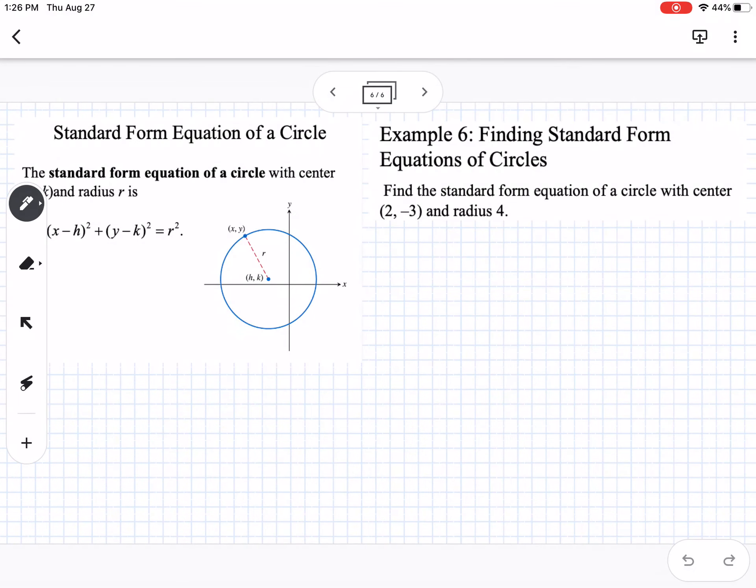Okay, the last thing is the standard form equation of a circle. So this over here you can see is our equation. So we need to know three things. We need to know h, k, and r. So h and k is the center, and r is the radius.